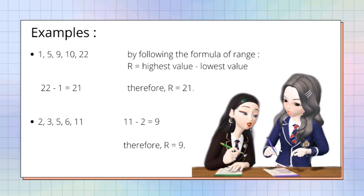Another example: the given data set is 2, 3, 5, 6, and 11. Using the same process, we find the highest value is 11 and the lowest is 2. By following the formula of range, 11 minus 2 equals 9. Therefore, our range is 9.